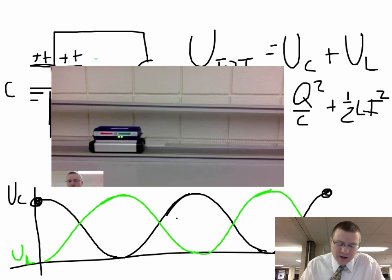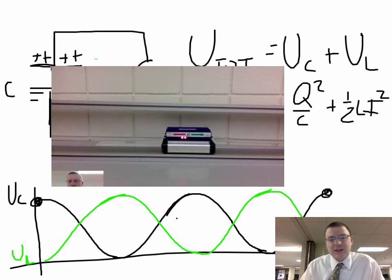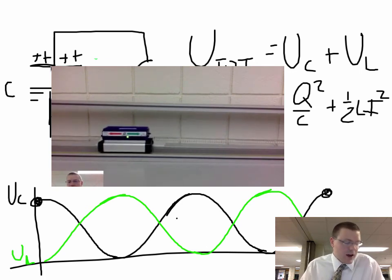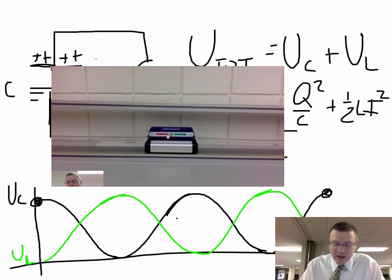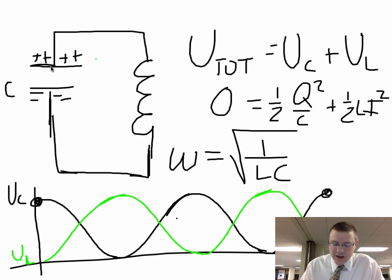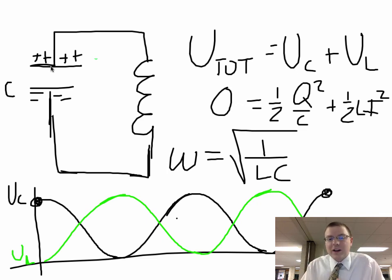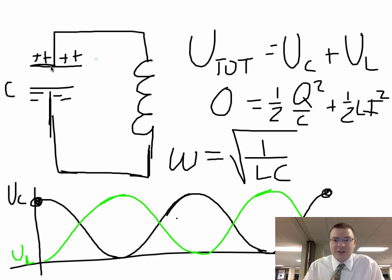We talked about angular frequency, or how quickly this oscillates back and forth — in a mass-spring system it's √(K/M). What we found in the lab today is that for an LC circuit it is actually 1/√(LC): one divided by the square root of inductance times capacitance gives you the angular frequency of this oscillation.